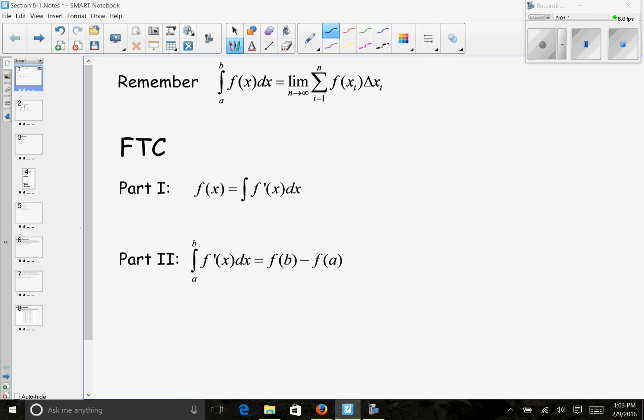Part two then is our definite integral, which says we would take an anti-derivative, plug in upper bound, plug in lower bound and subtract. If I'm doing the integral of f prime, the anti-derivative of f prime from part one is f, plug in the upper bound, plug in the lower bound and subtract. That's another way of looking at part two.